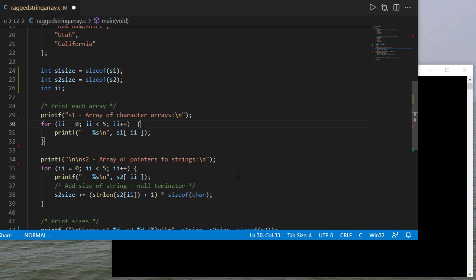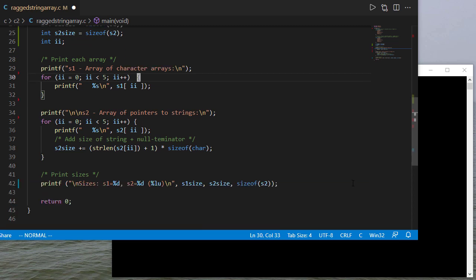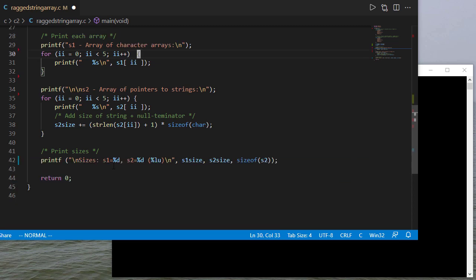However, for S2, since it's an array of pointers, it's not taking into consideration the size of the actual strings. And so I need to add however many characters are being used inside of that string. So then I'm going to print the sizes. I print the size of S1, size of S2. And in parentheses, I'll actually print the original size of S2. That'll tell me how many spaces I'm losing due to the pointer array that doesn't hold any actual characters.